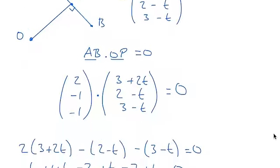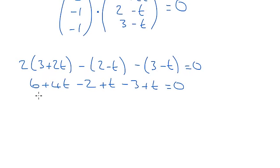Yeah, well it's position vector. So that will be 6 take away, 2 take away 3 is 1, and 4 plus 2, sorry, 4 plus 1 plus another one is 6. So 1 plus 6T equals 0, so T is going to be negative 1 sixth.